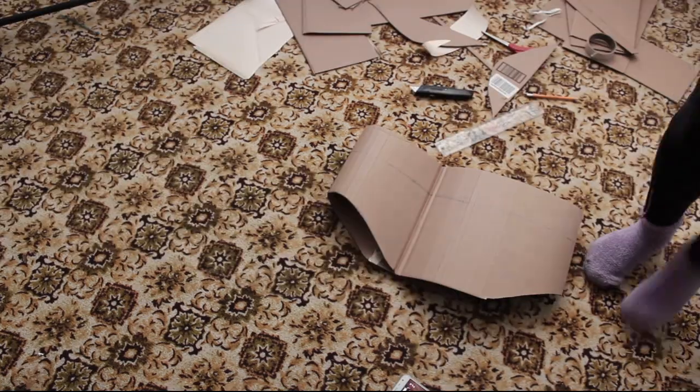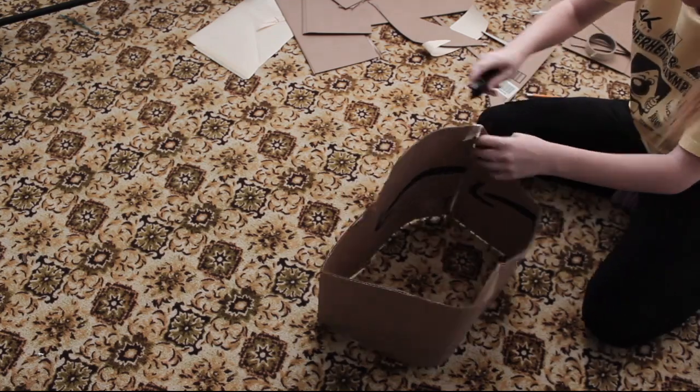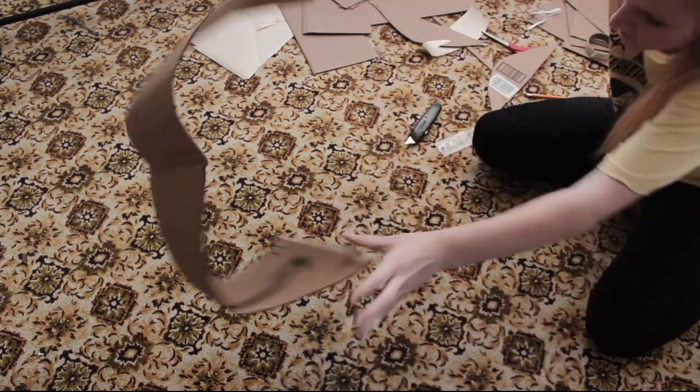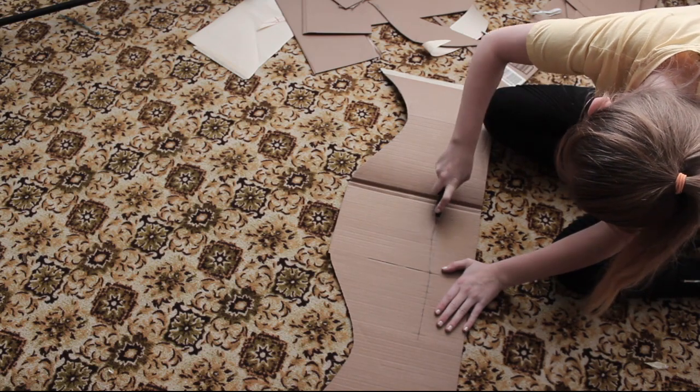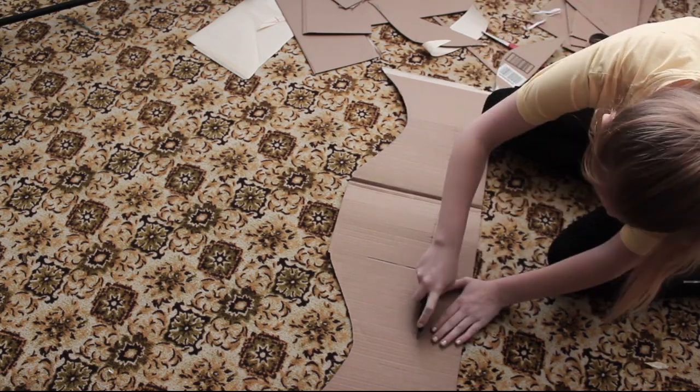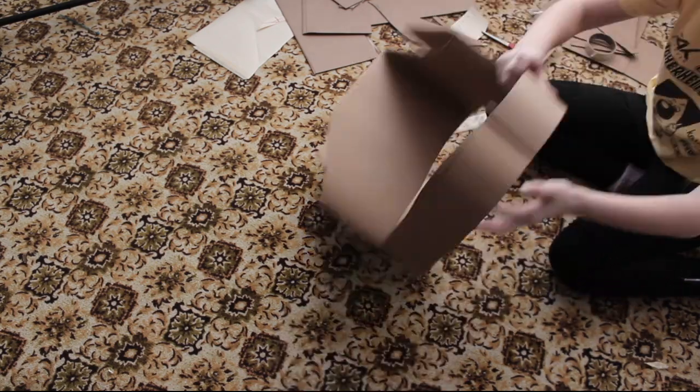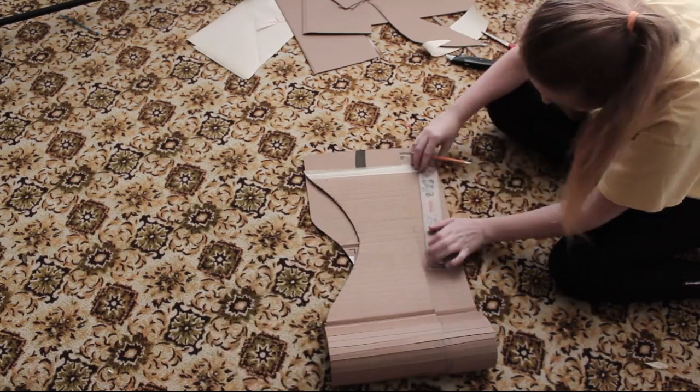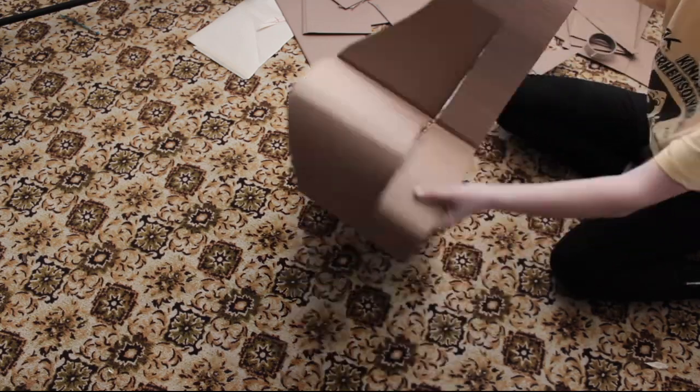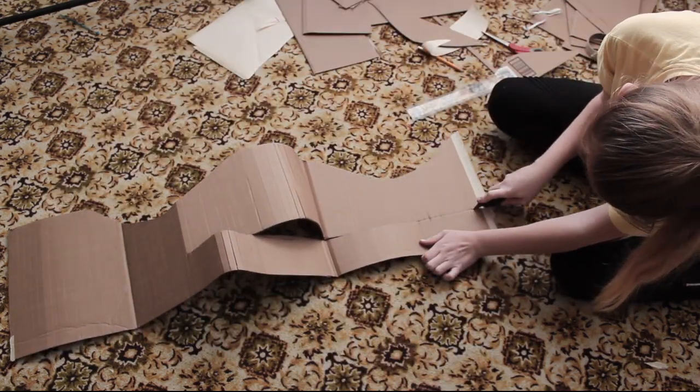Next you're going to take a ruler and make little slits along it, and I kinda eyeballed it, but it was around 1-2 cm each apart. And this allows it to bend the cardboard more easily and make it look more flawless. You just have to go through with your X-Acto knife once and then it's basically cut to the point where you can bend it.